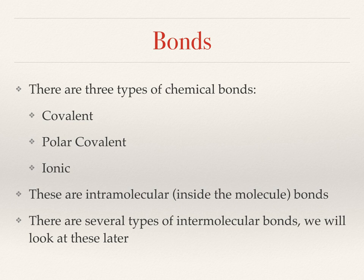On to the different types of chemical bonds - there are three types: covalent, polar covalent, and ionic. There are also different bonds between molecules, called intermolecular bonds. We'll mention these towards the end of the video.